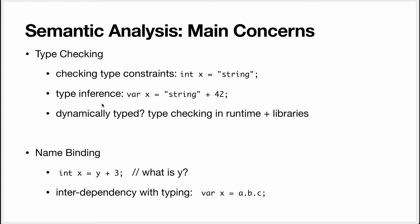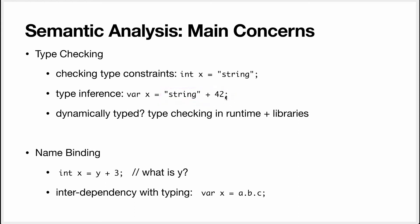There is also type inference, which is almost the same. In Java 11 and afterwards, you can write 'var,' meaning the type of variable x will be inferred from the type of the right-hand side. First I need to determine the type of the expression — string plus integer is going to be a string — and so now I know that string is going to be the type of variable x.